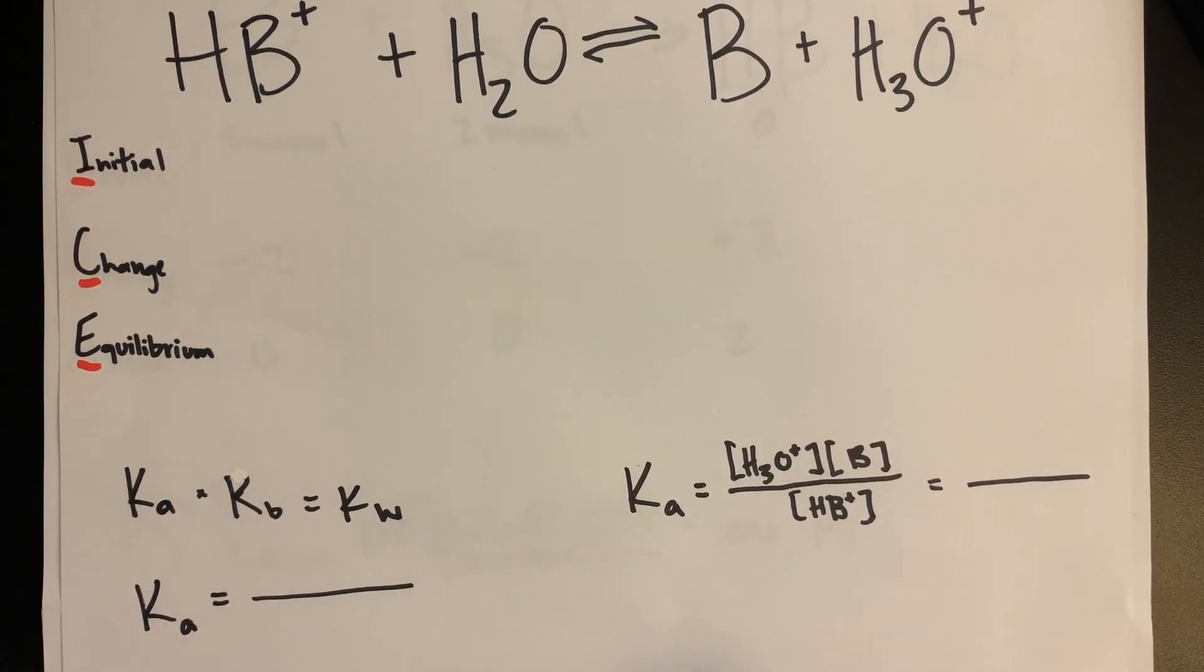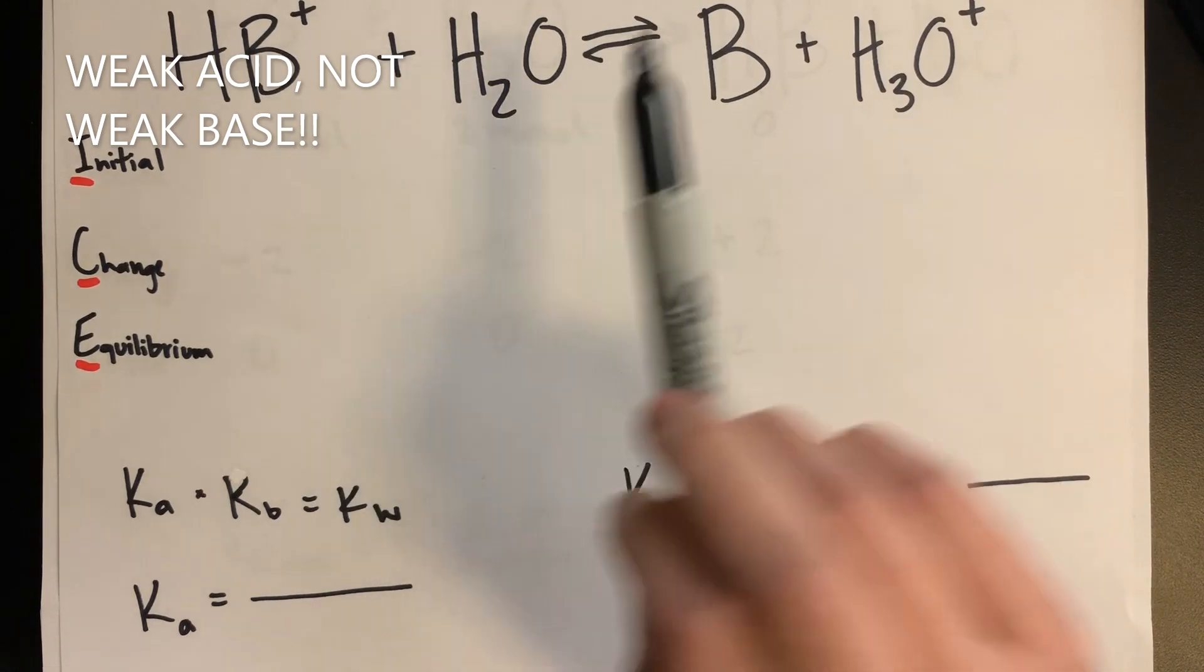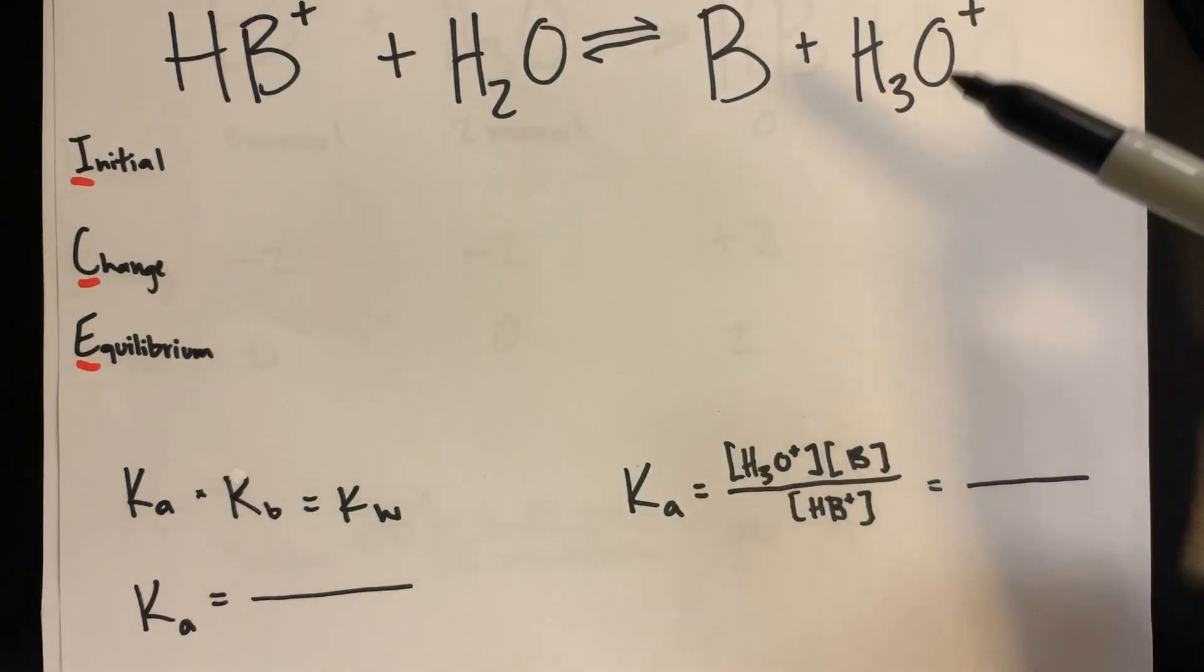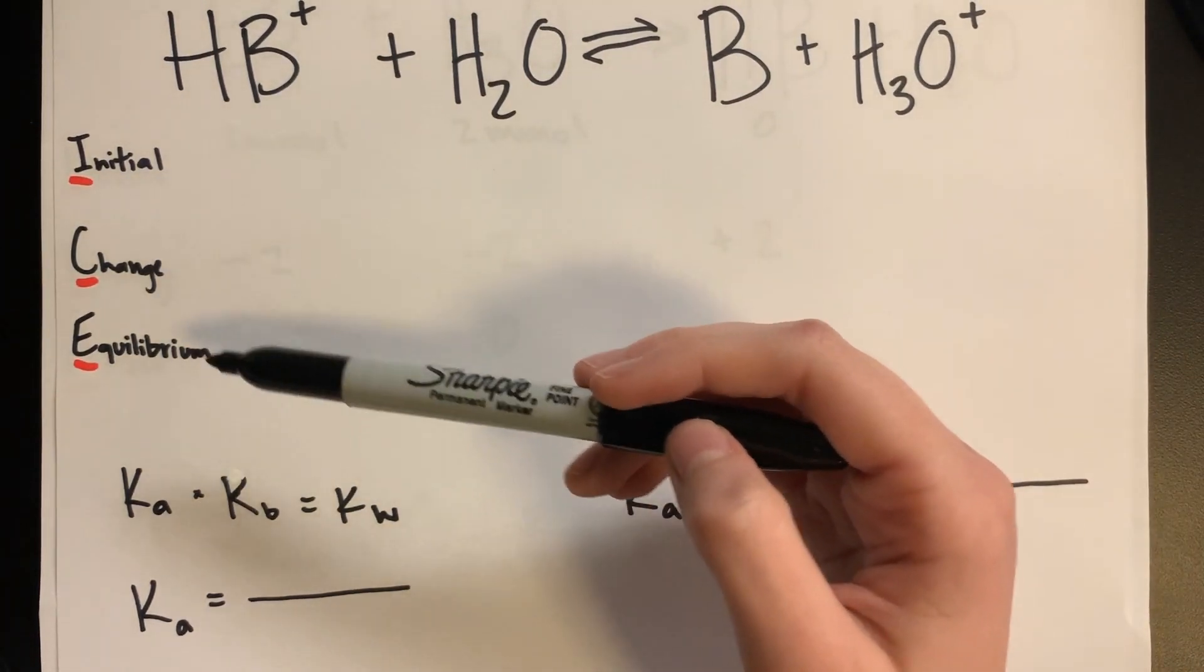We're going to use the molarity of the conjugate acid that we just calculated, and since it's a weak base reacting with water, we're going to use the equilibrium problem and use the ICE table, which means initial change in equilibrium.